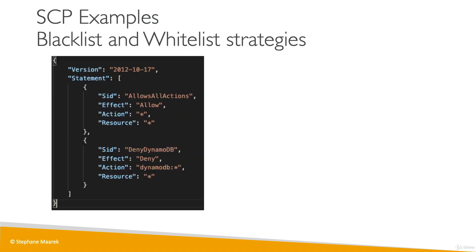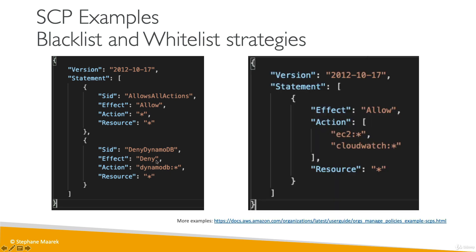An SCP looks just like an IAM policy. For example, you can allow all actions with a star on star, then deny DynamoDB with an explicit deny on DynamoDB star for any resource. Another strategy is to whitelist only specific services — for example, allowing EC2 and CloudWatch only, meaning any other service cannot be used. There's a link to the documentation showing more SCP examples.